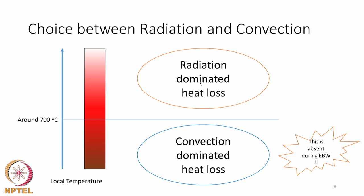We can sometimes simplify the problem by analyzing which heat loss mechanism dominates. Around 700°C there is a shift in which process dominates heat removal: radiation dominates significantly above 700°C, while convection plays a greater role at lower temperatures. In electron beam welding there is no gas medium in the chamber, so convection-dominated heat loss is totally absent and heat loss is primarily by radiation even at lower temperatures, which is not very effective.